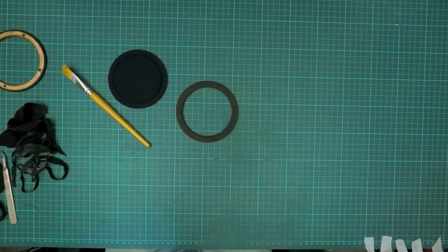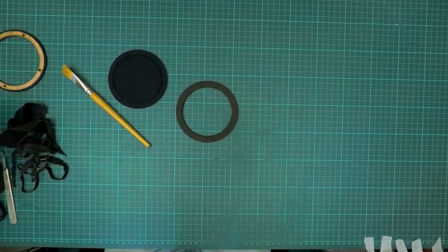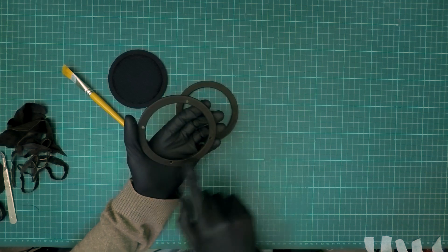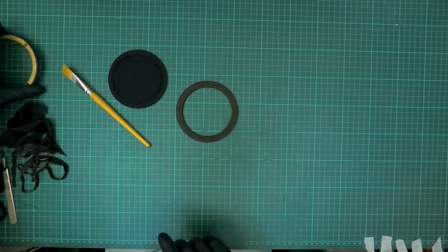Before gluing the leather wrapped front ring to the back plate, we are now going to open up the four holes using a four and a half millimeter diameter drill bit.